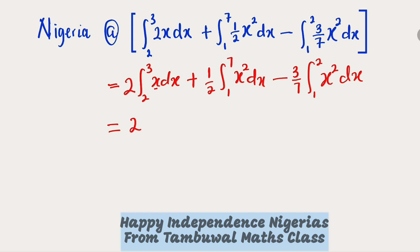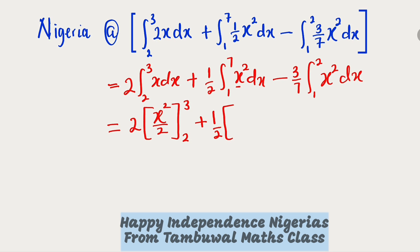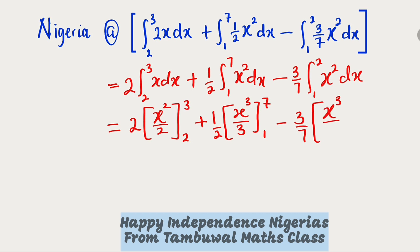This is equal to: we have 2 already outside. If you integrate x you're going to obtain x squared divided by 2, so we have x squared divided by 2 from 2 to 3. Then plus we have 1 over 2 here. If you integrate x to the power of 2 you're going to obtain x to the power of 3 divided by 3 — with our lower and upper bounds. Minus we have 3 divided by 7; if you integrate x squared you're going to obtain x to the power of 3 divided by 3.